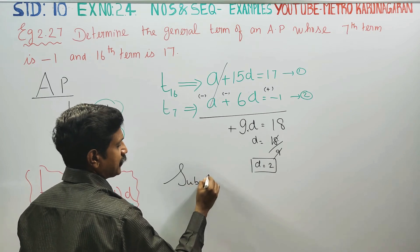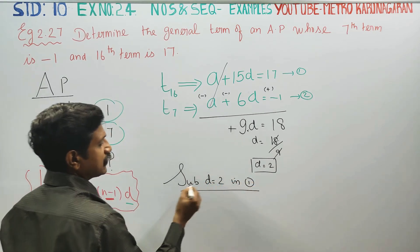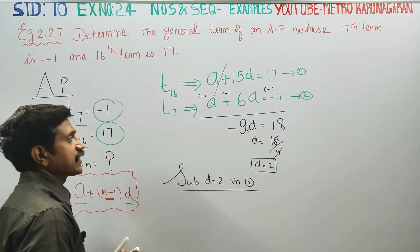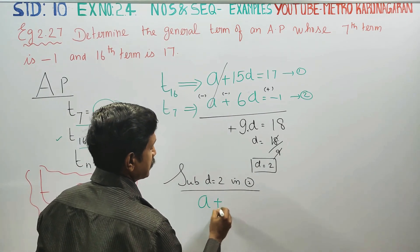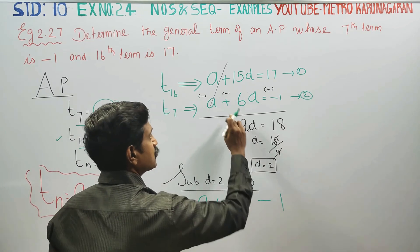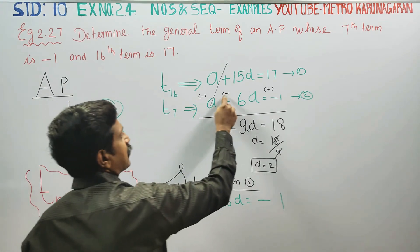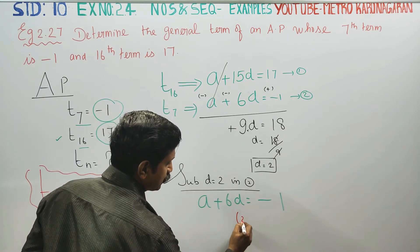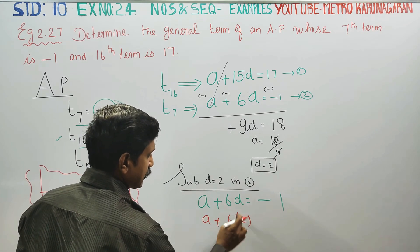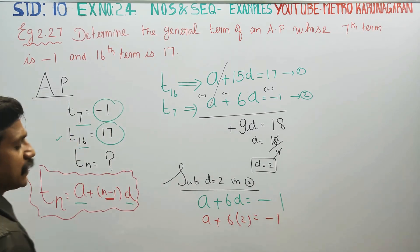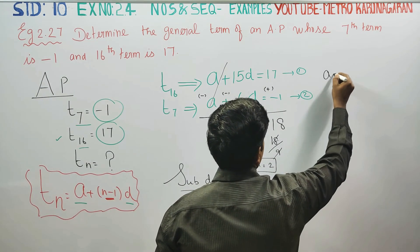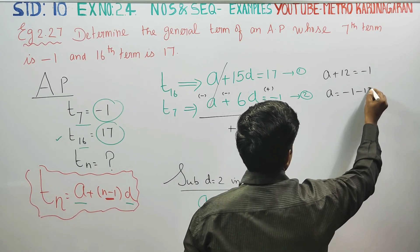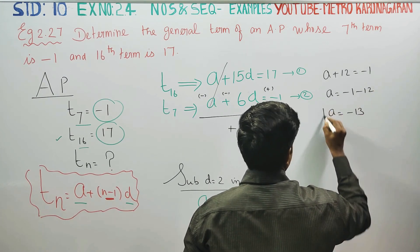Substitute D equals 2 in equation number 1. A plus 6 into 2 equals minus 1. A plus 12 equals minus 1. A equals minus 1 minus 12. A equals minus 13. This is the answer.